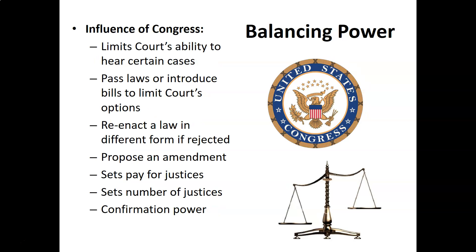From a Congress standpoint, Congress can limit the court's ability to hear certain cases because they have the power to establish their own courts. They can pass laws or introduce bills to limit the court's options. They can reenact a law in a different form or tack it onto another bill if rejected. They can propose amendments, which can circumnavigate court rulings because they go into the Constitution. They can set the justices' pay, set the number of justices — we have nine right now but they can raise or lower that number — and confirmation power is also a big part of it.